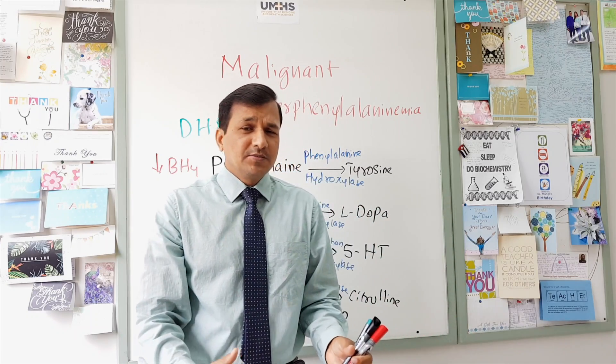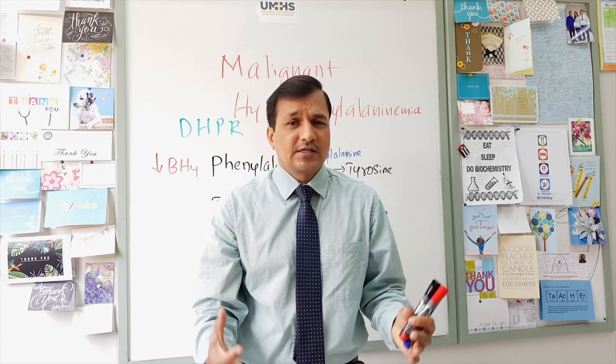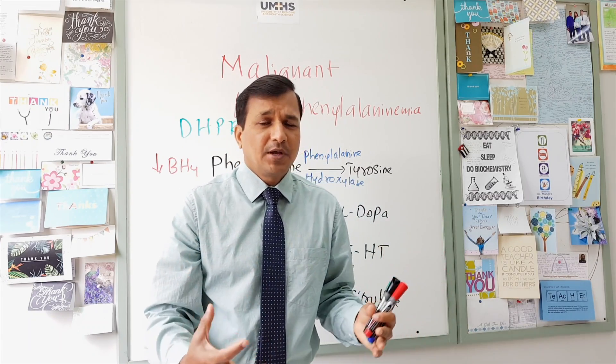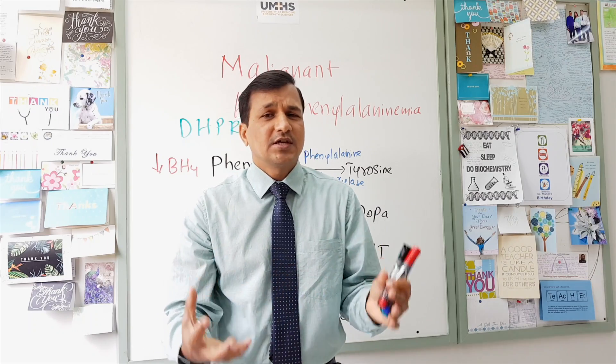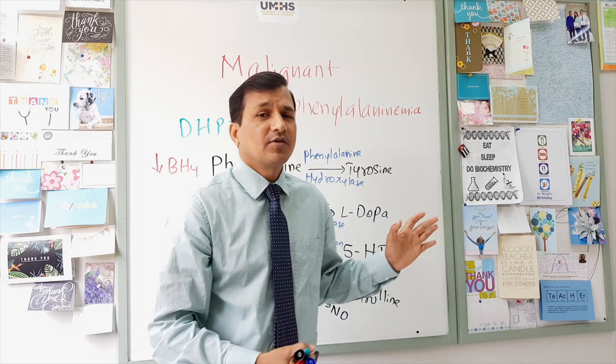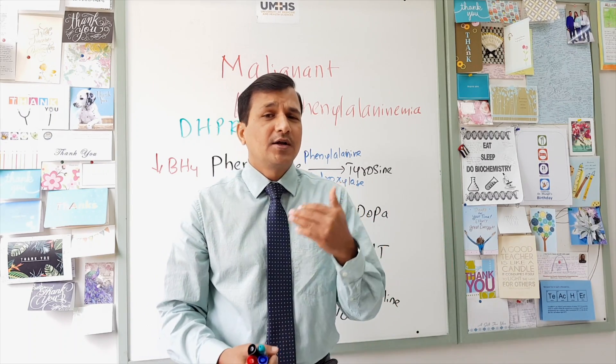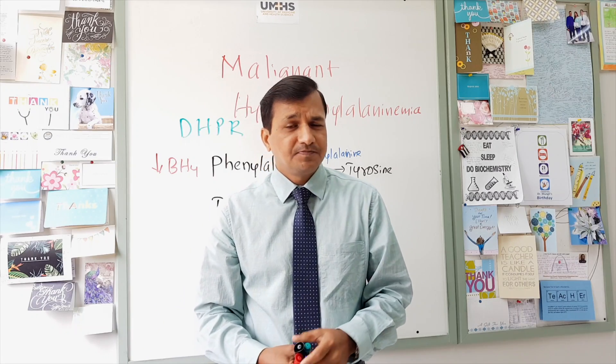Most of the classic signs of phenylketonuria — such as mental retardation, eczema, and hypopigmentation — will be seen in malignant hyperphenylalaninemia as well.